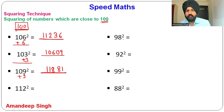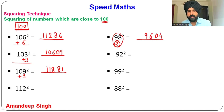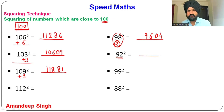For 98²: it is 2 less than 100. 2² = 4, write 04. Subtract 2 from 98: 98 − 2 = 96. So 98² = 9604.